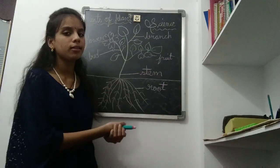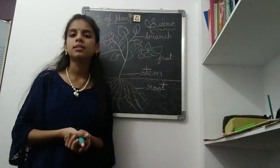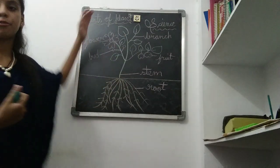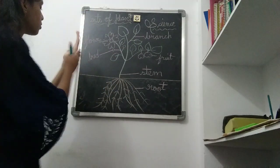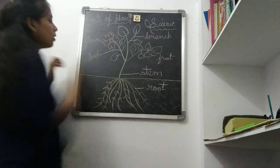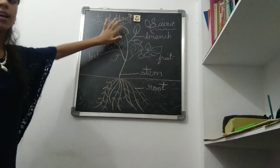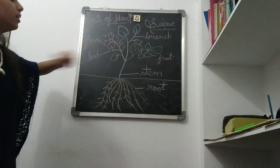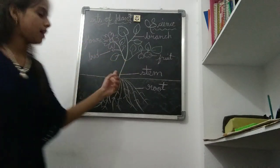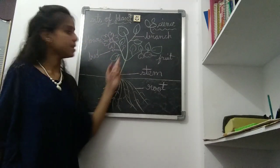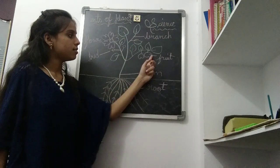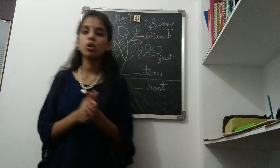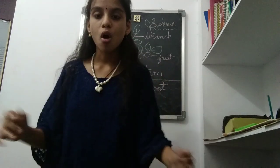These are all parts of plant. This is a leaf, this is a flower, this is a bud, and this is the stem. These are branches. This is fruit. And this is root. I am going to show you that now.